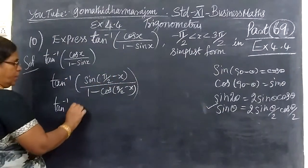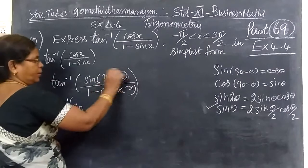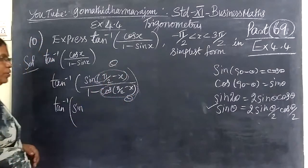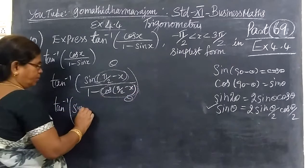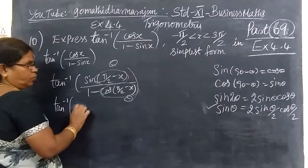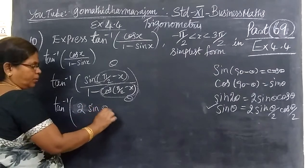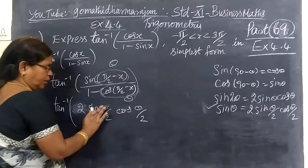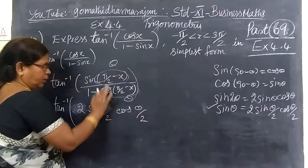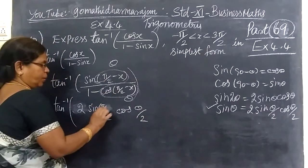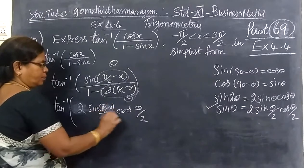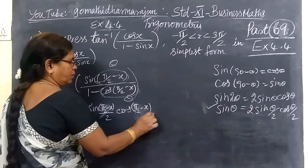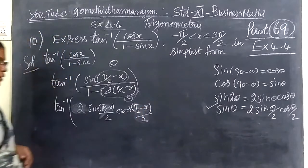Here we write sin of complete theta. Now, 2, theta by 2 — it is theta by 2. This is π by 2 minus x by 2, then here also π by 2 minus x by 2.